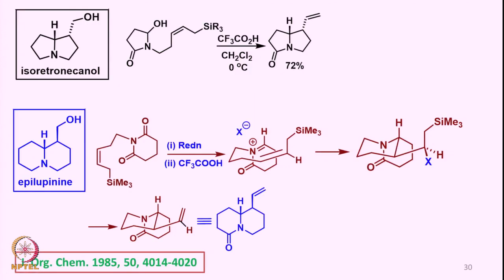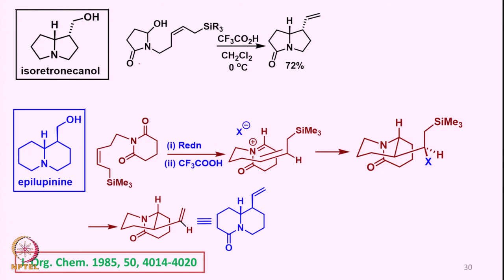This is the structure of isoretronicanol. As you can see, when this compound undergoes cyclization as we saw just now, it forms this intermediate. You then have to reduce the lactam part, which can be done by various reducing agents — for example, lithium aluminum hydride — and then one can get the corresponding CH2 group of isoretronicanol.